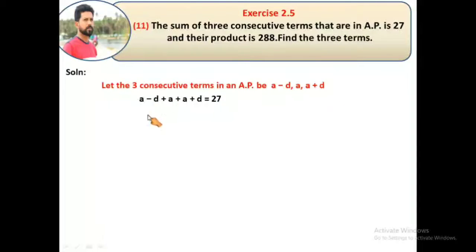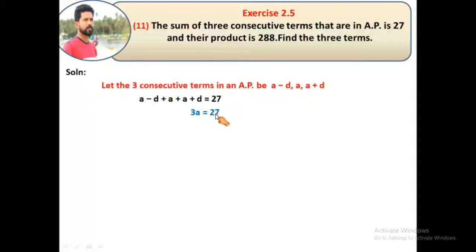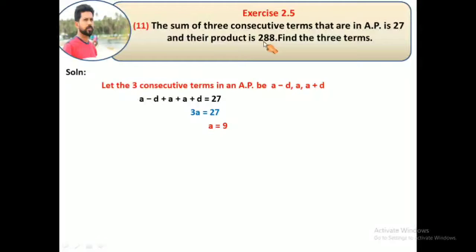From the sum condition: (a-d) + a + (a+d) = 27. The -d and +d cancel, so we have 3a = 27, therefore a = 27/3 = 9. Now for the second condition, their product is 288.